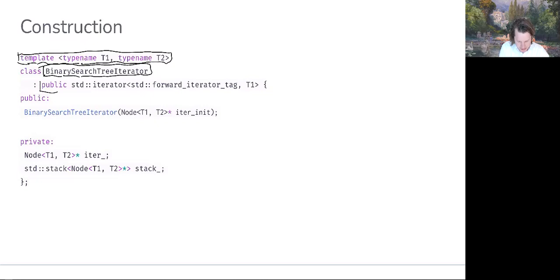Notice here we're using that inheritance scheme to essentially say that the type of iterator being implemented is going to be a forward iterator, and this has to do with traits and other things that we're not necessarily going to get into in this class.